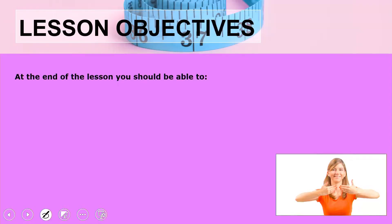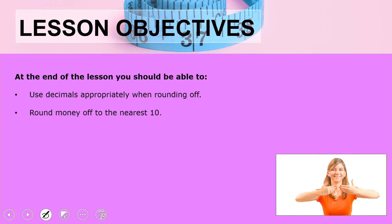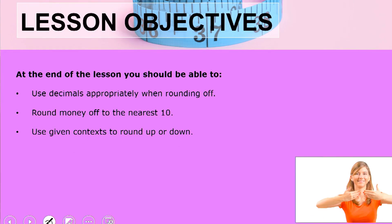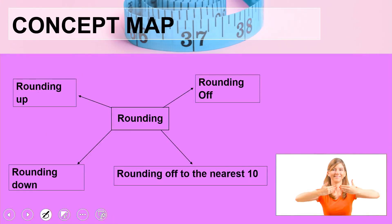Let us look at the objectives for your lesson. At the end of this lesson you should be able to use decimals appropriately when rounding off, round money off to the nearest 10, and use the given context to round up and even to round down. We are going to cover rounding off, rounding off to the nearest 10, rounding down as well as rounding up.